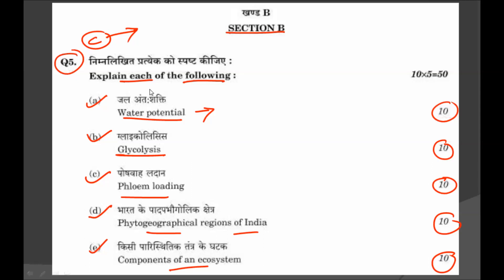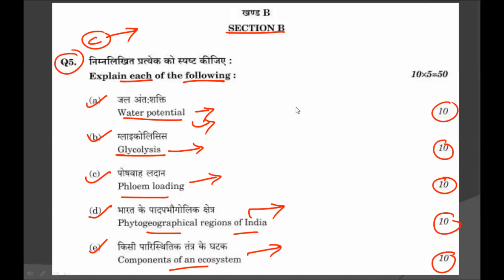Then components of the ecosystem, covering biotic and abiotic components, for 10 marks. This composite question is so easy that you can score full marks here. You have to briefly explain water potential, then glycolysis in which glucose is broken down, then phloem loading and unloading, then phyto-geographical regions of India, and components of the ecosystem.